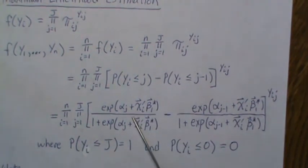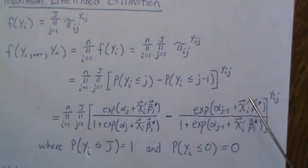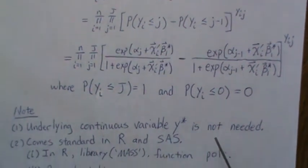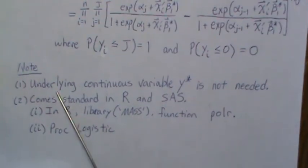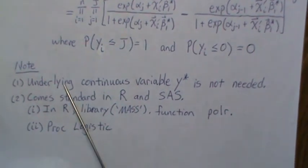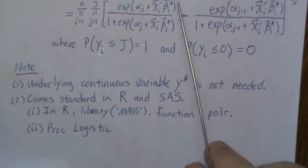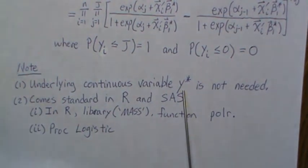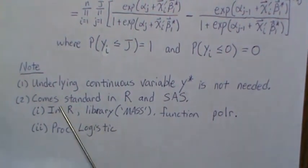And so to maximize this, then you use one of the optimization algorithms. There's plenty out there. We're not going to discuss that in this video, but it should be noted that here's a couple notes. First of all, the underlying continuous variable Y* is not needed in any of this development, but it was needed in the development of this, this procedure, this method, but it's not needed to maximize and find those coefficients or the parameters.